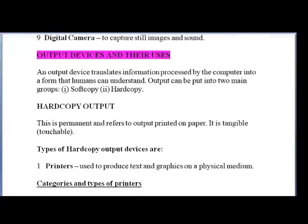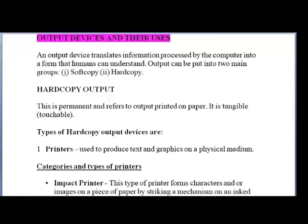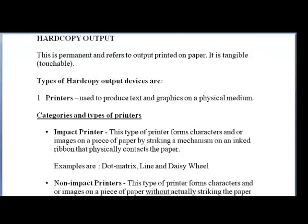Output devices translate information processed by the computer into a form that humans can understand. Output can be put into two main categories: soft copy output and hard copy output. Hard copy output is permanent and refers to output printed on paper. It is also tangible, meaning you can touch it. Your multiple choice paper that you will be getting is definitely an example of a hard copy output.